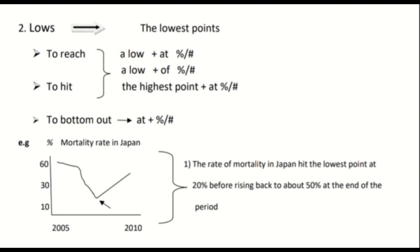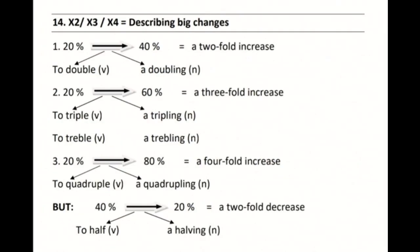This example talks about mortality rate in Japan. The sentence reads: 'The rate of mortality in Japan hit the lowest point at 20 percent before rising back to about 50 percent at the end of the period.' The lowest point is between 30 and 10, which is 20 — correct. And at the end it rose back to just before 60, which means approximately 50 percent. This is how sentences are constructed.